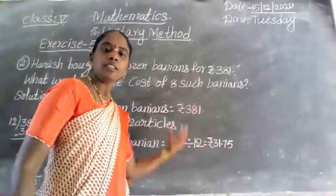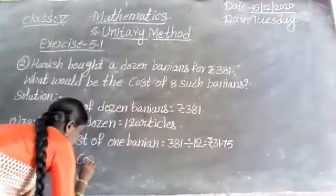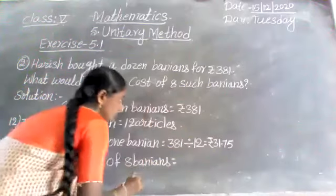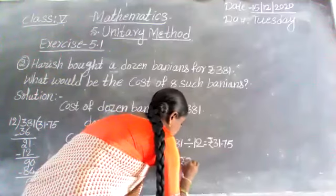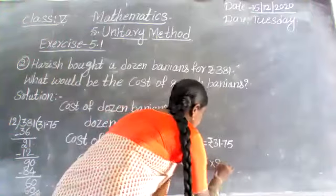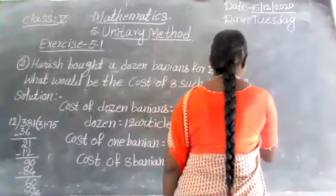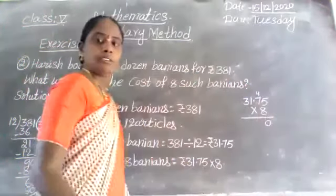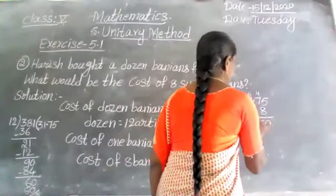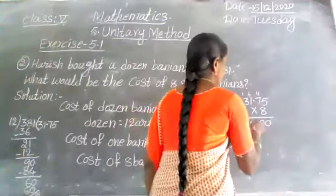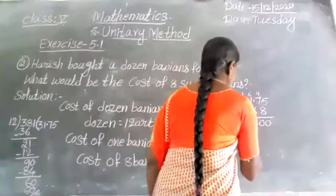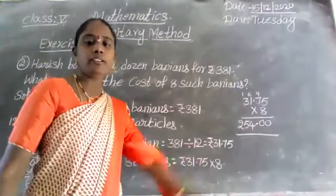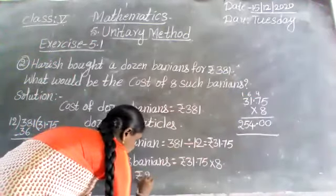Now we find the cost of 8 baniyans: 31.75 × 8. Calculating: 8 sevens are 56, plus 4 equals 60; 8 fives are 40, plus 6 equals 46; carry over gives 254. The cost of 8 baniyans is 254 rupees.